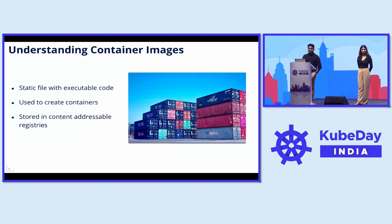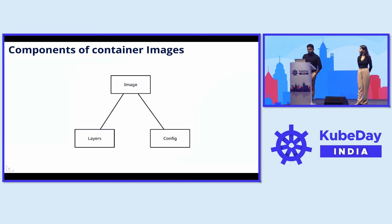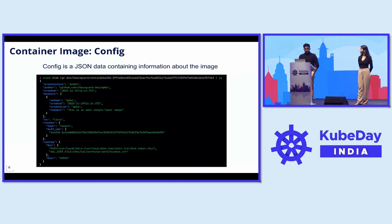This is a guarantee of immutability — if the content changes, the digest changes too, and this changes the URL as well. This immutability comes in really handy when we want to ensure supply chain security. A container image has configs and layers. Config, as the name suggests, is the configuration of the container image, which can be used to create the container properly and make sure that everything is in place.